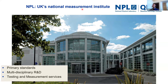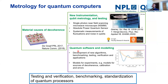NPL is the UK's National Measurement Institute. The main building is located in London Teddington. NPL's activities include establishing primary standards, multidisciplinary R&D, and testing and measurement services. For quantum computers, we determine material causes of decoherence in qubits, develop new instrumentation for qubit metrology and testing — essentially telling people how good a quantum computer is.